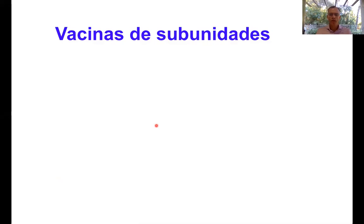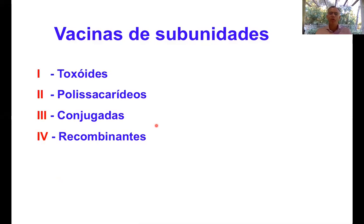As vacinas de subunidades empregam uma parte do micro-organismo e, por isso, elas são consideradas bastante seguras. Eu classifiquei aqui quatro tipos de vacinas de subunidades que podem ser produzidas: aquelas chamadas de toxóides, as vacinas feitas a partir de polissacarídeos, as chamadas vacinas conjugadas e as vacinas recombinantes.